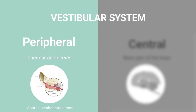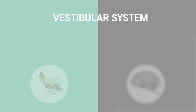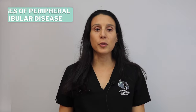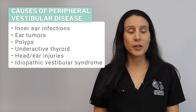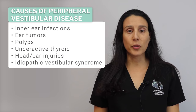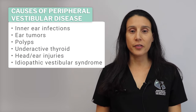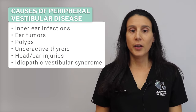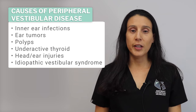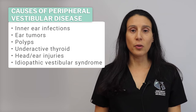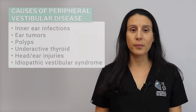The vestibular system is made up of two parts. The peripheral vestibular system consists of the inner ear and nerves traveling from the ear to the brain. Disorders that affect the peripheral vestibular system include problems like inner ear infections, ear tumors and polyps, underactive thyroid, head or ear injuries, and idiopathic or old dog vestibular syndrome.